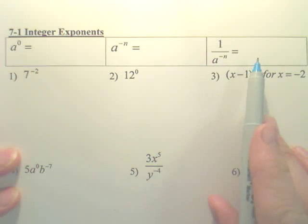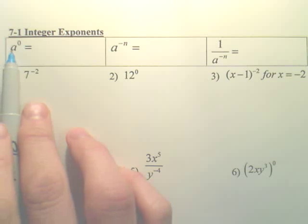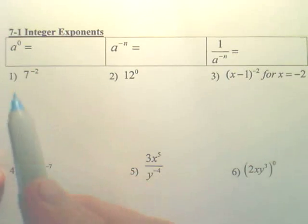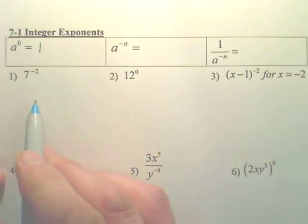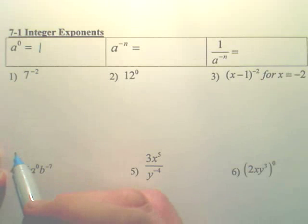Alright, let's look at these three properties to do these six problems. For this one, a to the zero. Whenever you take something to the zero power, the answer is 1. We'll show you in the future where that comes from, but for now you just got to trust me. a to the zero is 1.